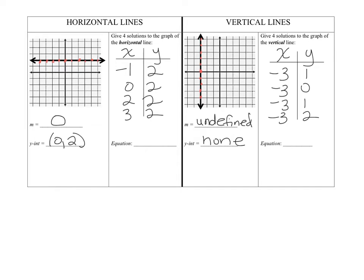Hopefully you didn't think I was trying to trick you with the vertical line. Let's look at the horizontal line first. If you look at this horizontal line, the slope is 0 and the y-intercept is (0, 2) — if you just put 2 here, that's totally fine. When you're listing your solutions, all of your y values for this problem end up being 2.